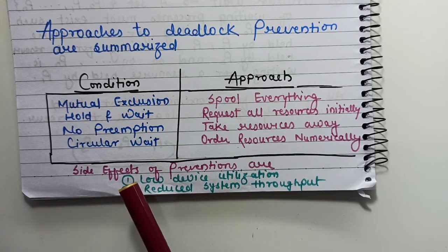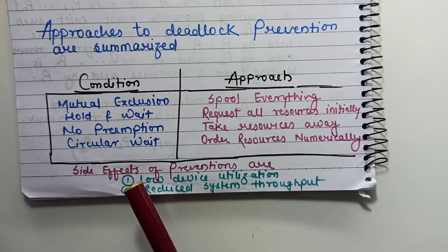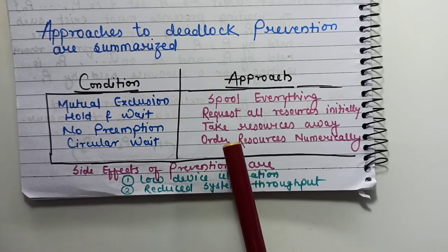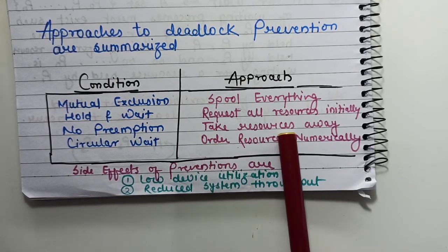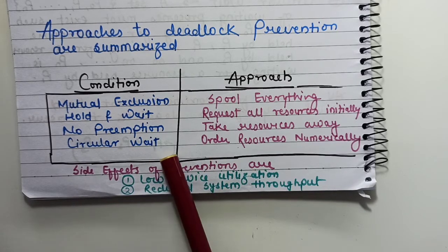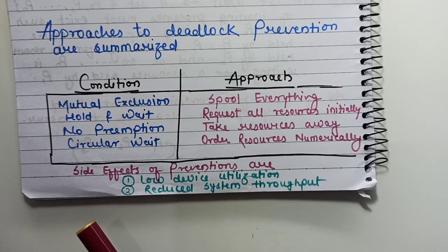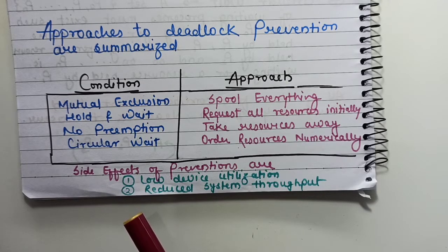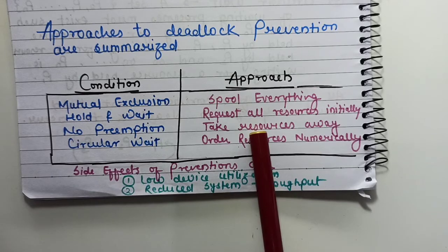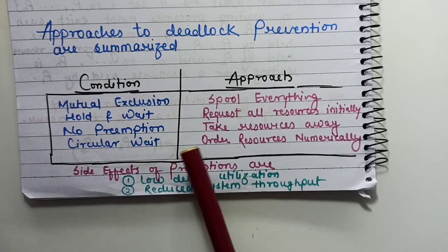No preemption means once resources are allocated to a process, they cannot be preempted — a process can only voluntarily release those resources. The violation is to take resources away from a process. For circular wait, we order resources numerically and require processes to request resources in that order. These were the approaches to violate each condition so that deadlock will never occur.